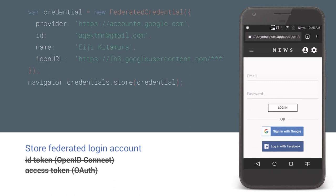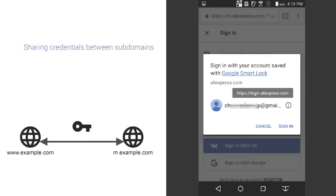To store federated login information, you're not storing things like an ID token for OpenID Connect or an OAuth access token. Instead, you store information about the identity provider and the user's account ID. One important recent update is sharing credentials across multiple domains. Access to credentials in the Credential Management API has been strictly restricted to the same origin, but now it's possible to share credentials between multiple subdomains in Chrome without any additional implementation.